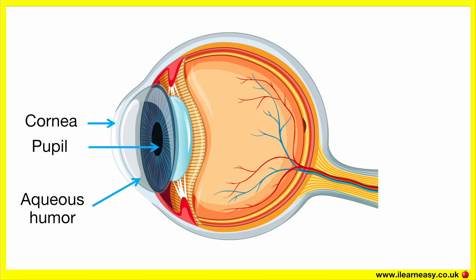The pupil. The pupil is the black circular opening in the centre of the eye. It controls how much light enters the eye — it gets bigger in the dark and smaller in bright light.